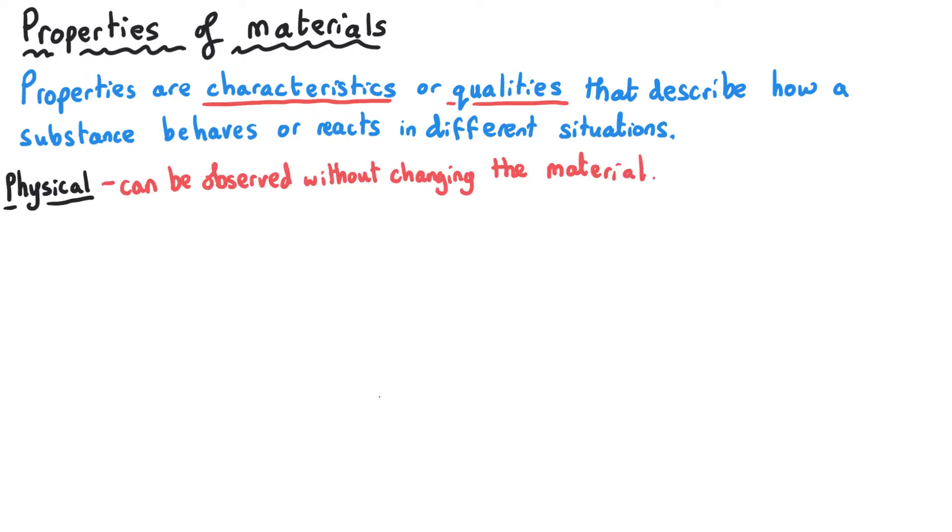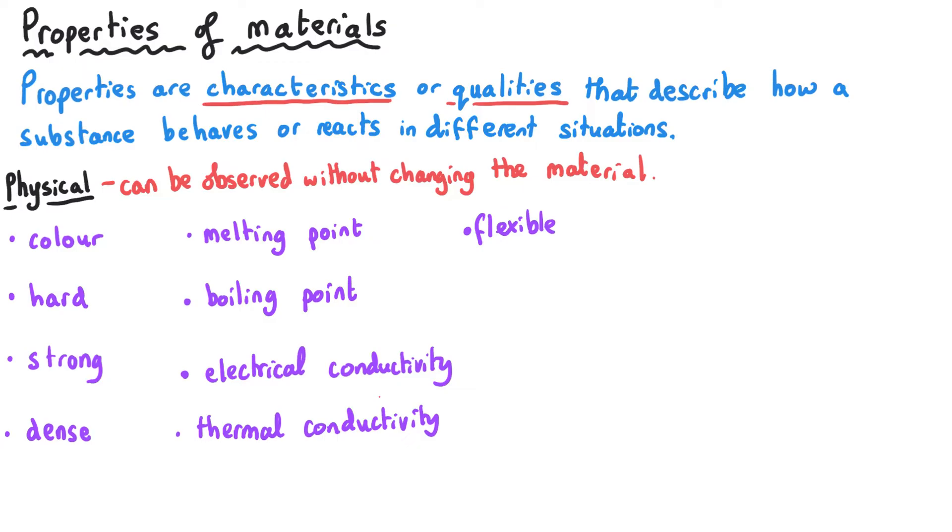Properties can be physical properties such as the colour of the substance, whether it is hard, strong, dense, the melting point and boiling point, electrical conductivity, thermal conductivity, whether something is flexible, malleable, ductile. All of these are physical properties.